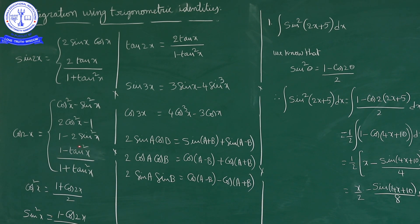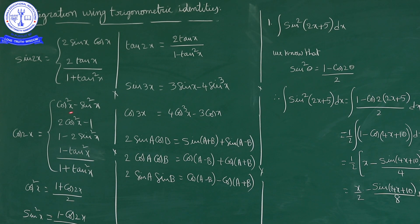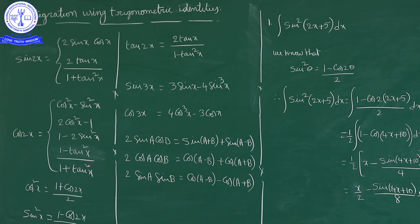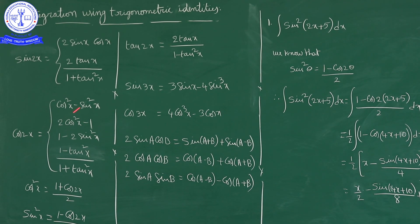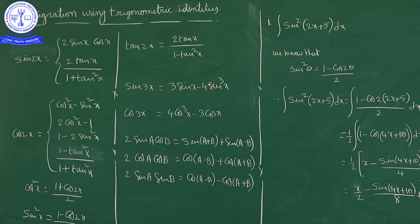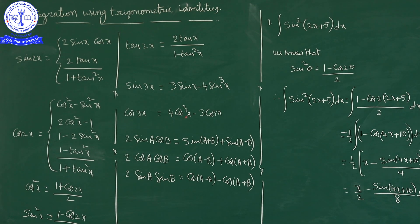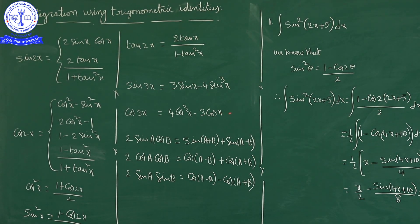One more formula: cos 2x in terms of tan is (1 minus tan²x) / (1 plus tan²x). So cos 2x has four forms: cos²x minus sin²x, or 2cos²x minus 1, or 1 minus 2sin²x, or (1 minus tan²x)/(1 plus tan²x). Next, tan 2x is 2 tan x upon 1 minus tan²x. Then, sin 3x is 3 sin x minus 4 sin³x, and cos 3x is 4 cos³x minus 3 cos x.